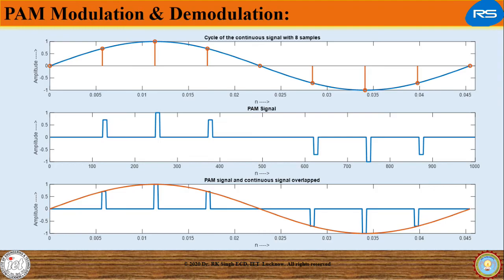These are the various waveforms showing continuous signal that is message signal, pulse amplitude modulation, pulse amplitude modulated signal and recovered original signal.